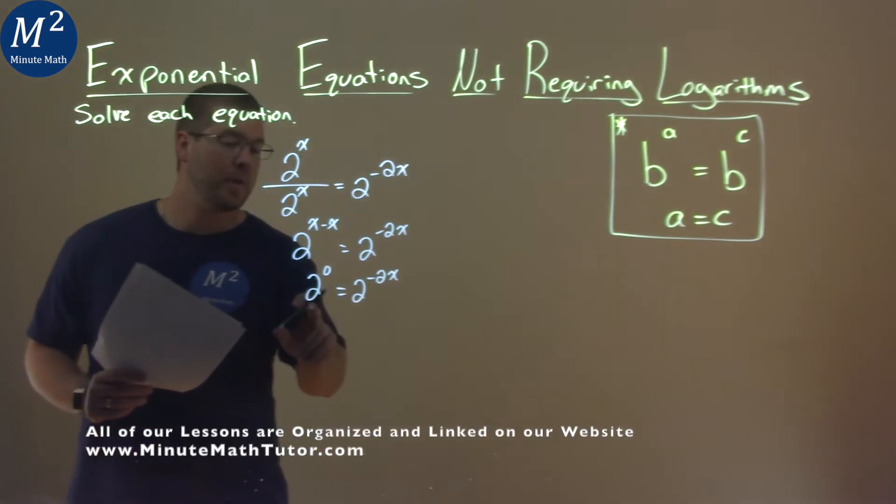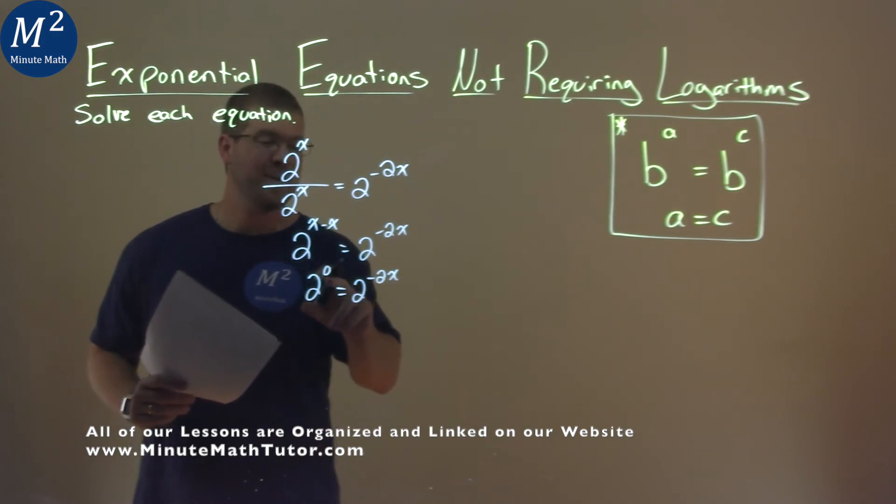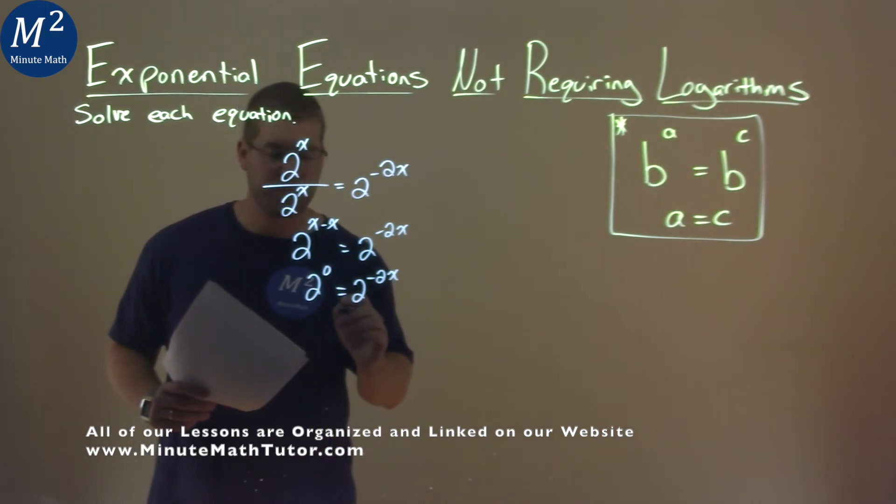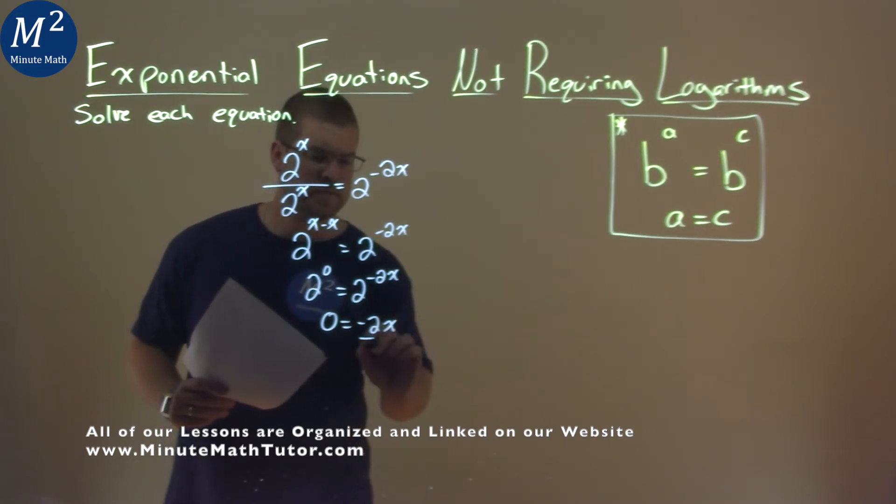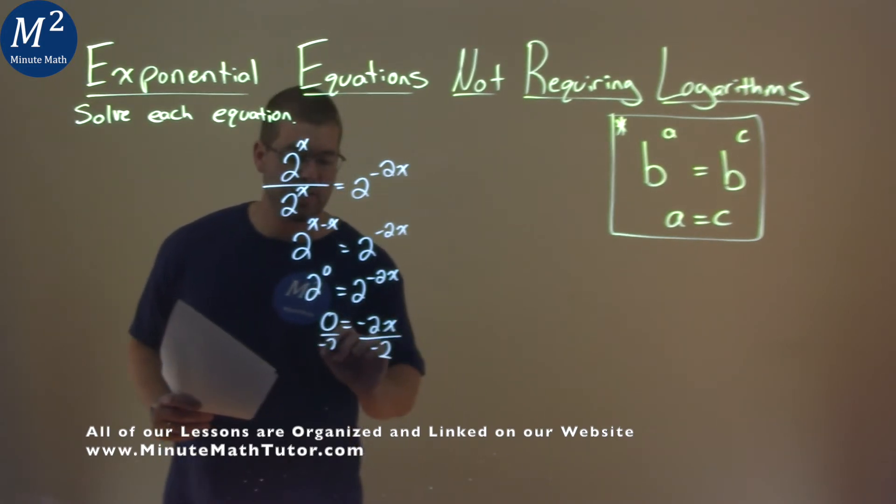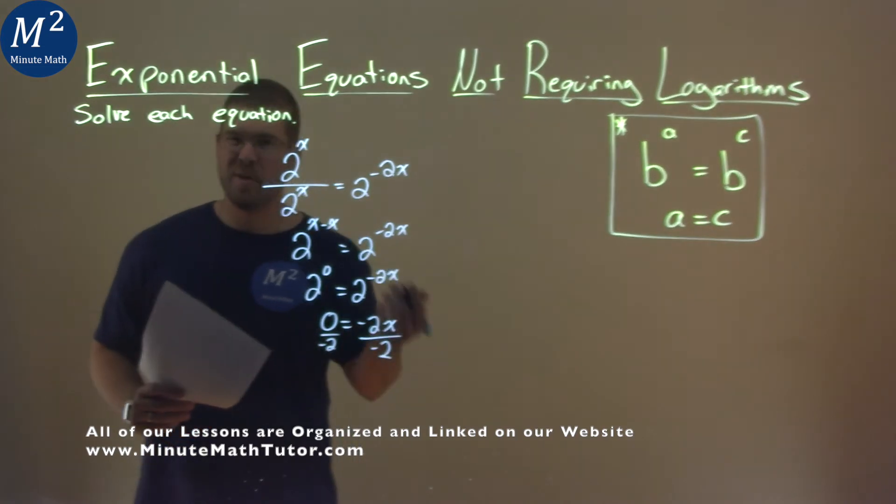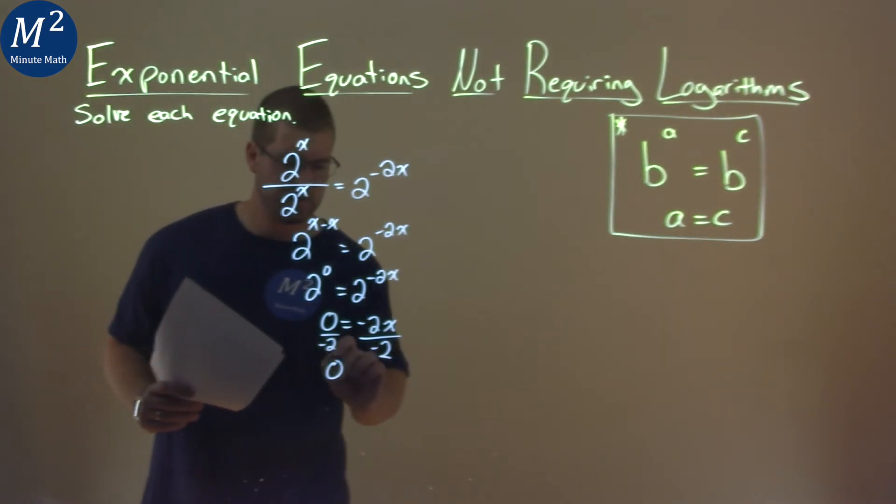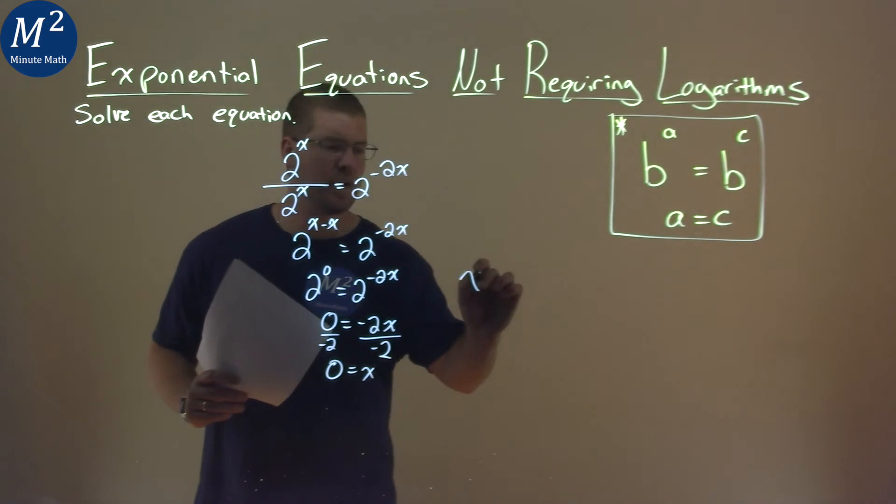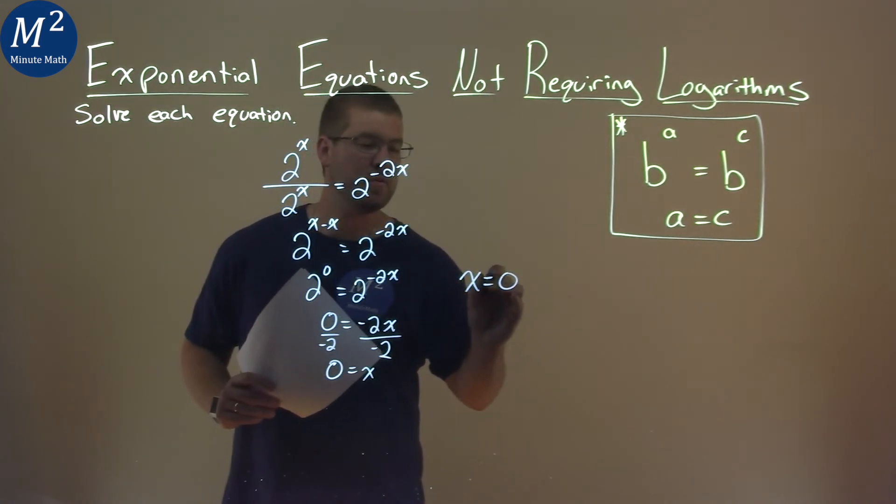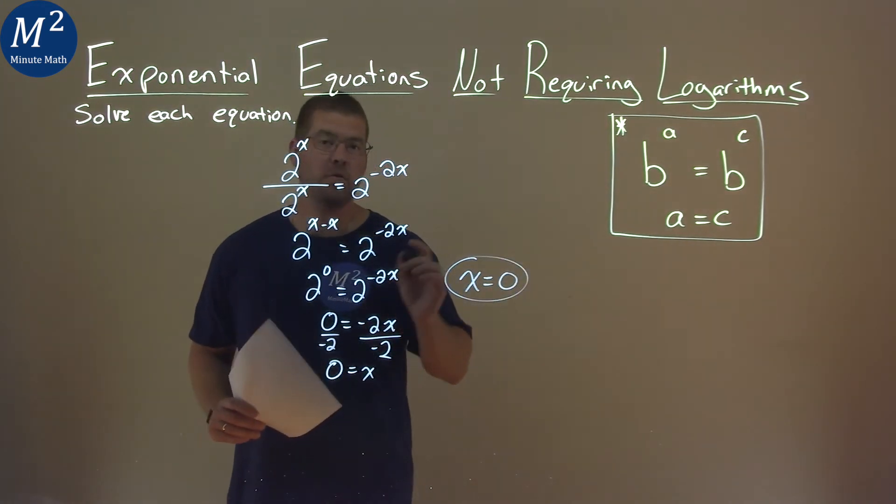Now when we have the same base on either side of the equation, we can set the exponents equal to each other. Zero equals negative 2x, and I solve for x. Divide both sides by negative 2, and zero divided by negative 2 equals zero, so x equals zero. That is our final answer.